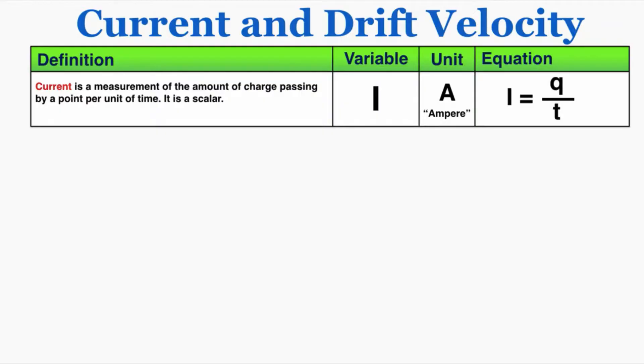The variable for current is capital I, and the unit is capital A, which stands for ampere. We also just call that amps, so we can say like 5 amps of current. The equation is current equals charge per time, because again it's the amount of charge passing per unit time for a given location.